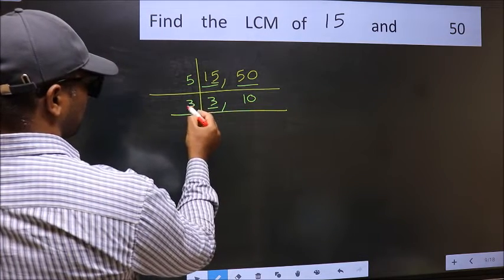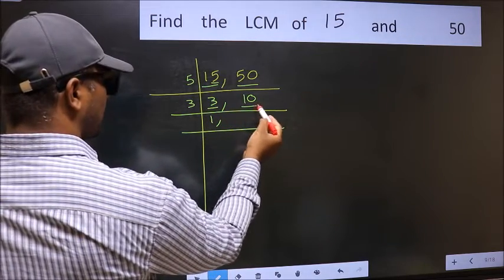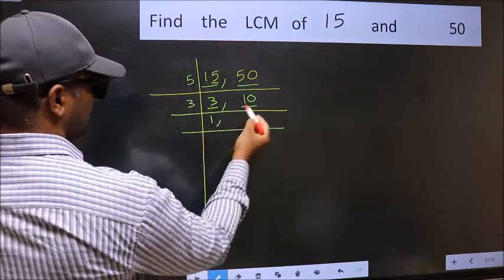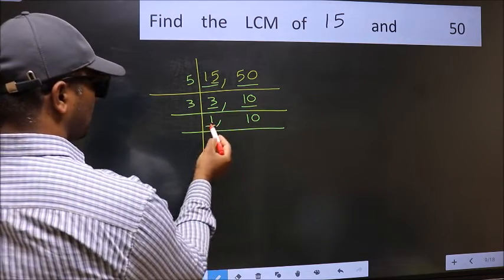3 is a prime number, so 3 times 1 is 3. The other number, 10, is not divisible by 3, so you write it down as it is. Now we got 1 here.